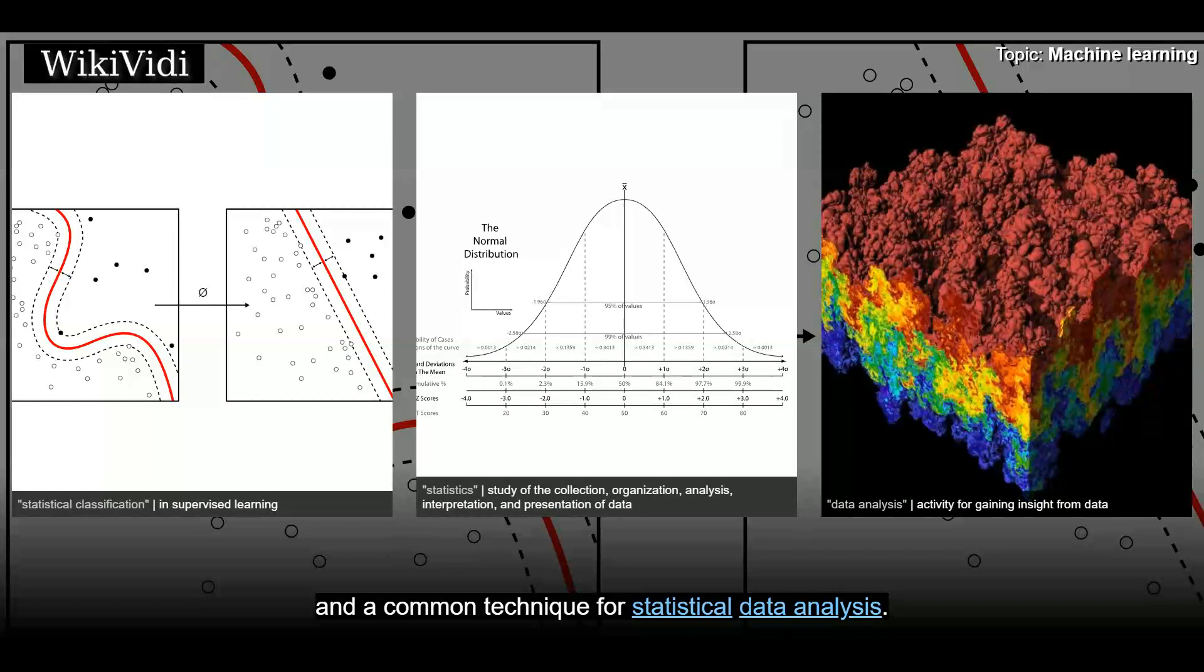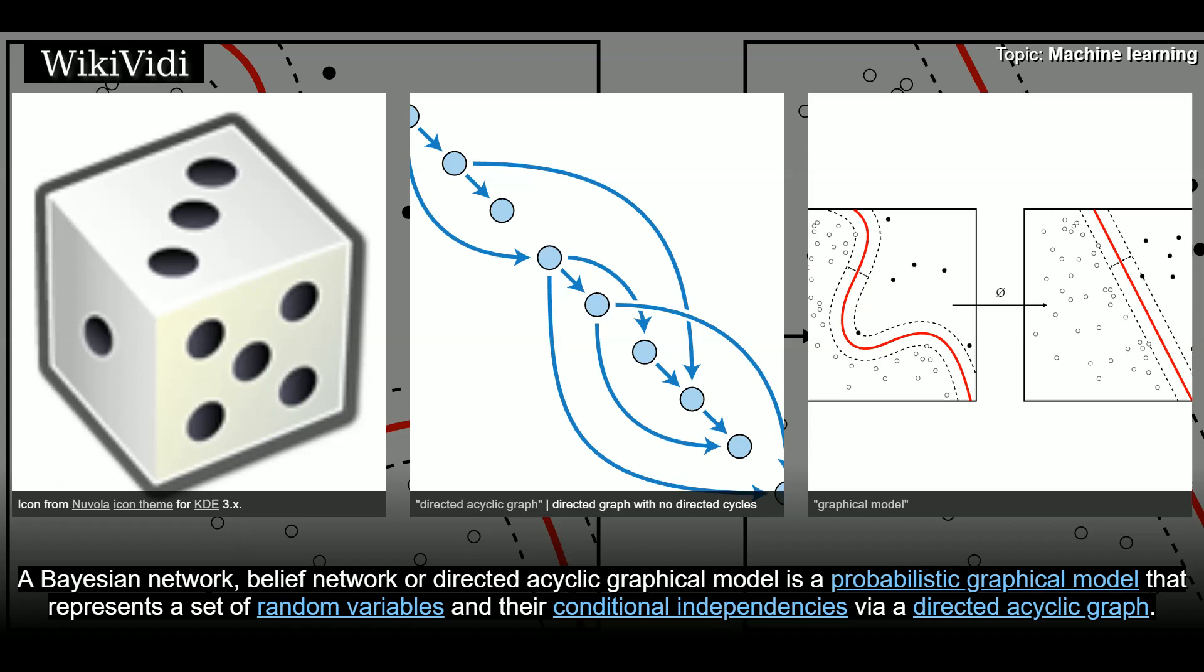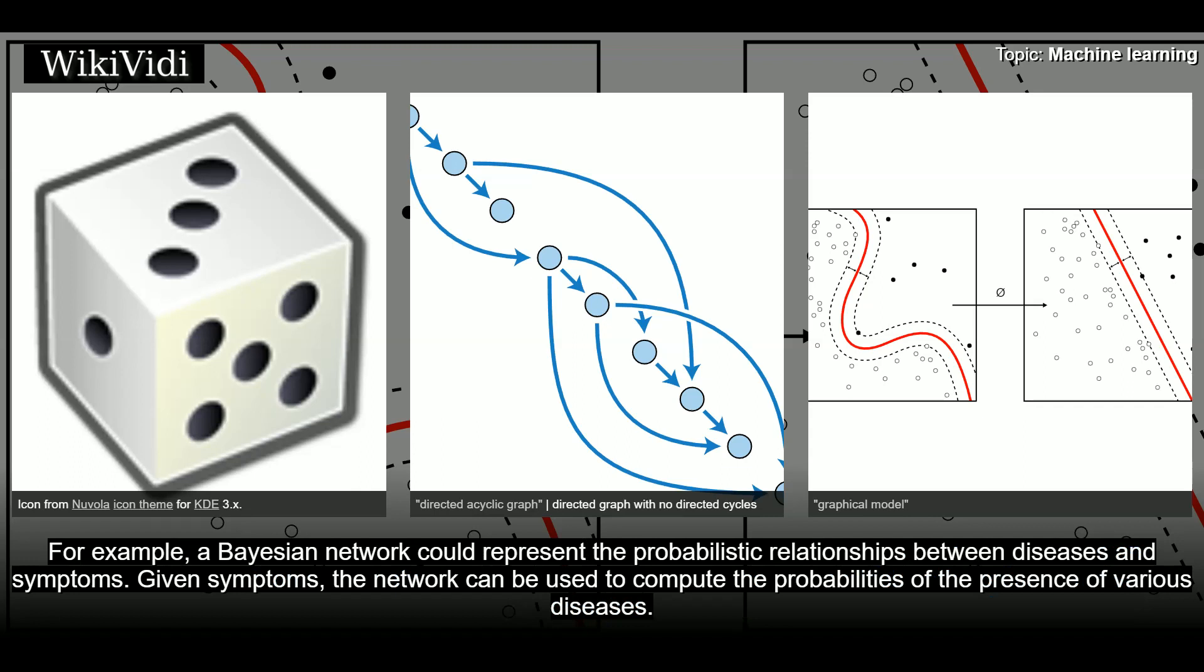Bayesian networks. A Bayesian network, belief network or directed acyclic graphical model is a probabilistic graphical model that represents a set of random variables and their conditional independencies via a directed acyclic graph. For example, a Bayesian network could represent the probabilistic relationships between diseases and symptoms. Given symptoms, the network can be used to compute the probabilities of the presence of various diseases. Efficient algorithms exist that perform inference and learning.